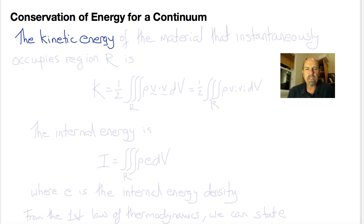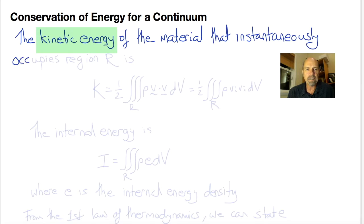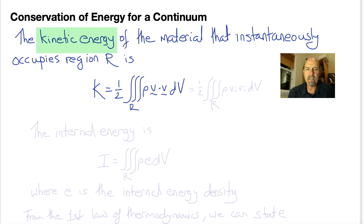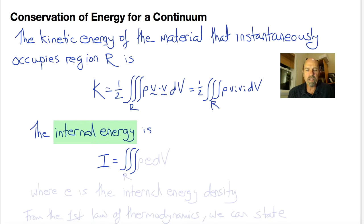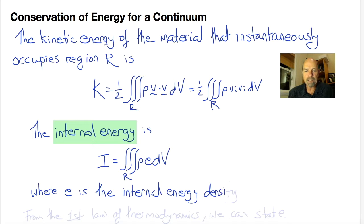Starting by considering the different terms that contribute to the energy, the kinetic energy K is one-half of the volume integral over the region R of rho times V dot V with respect to volume, or in index notation, one-half rho Vi Vi dV — energy is a scalar, one-half mv squared. The internal energy I is the volume integral over R of rho times e with respect to volume, where e is the internal energy density, i.e., the internal energy per unit mass.